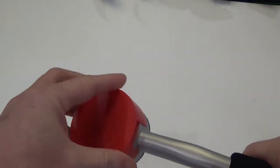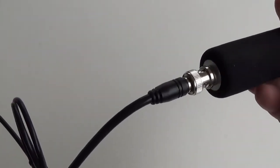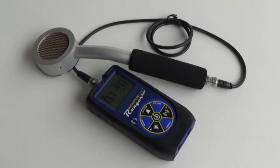The external GM detector has a 2-inch end window located under the protective tube cap. If you need to disconnect the external GM probe, be sure to turn off the Ranger EXP before disconnecting the BNC cable.